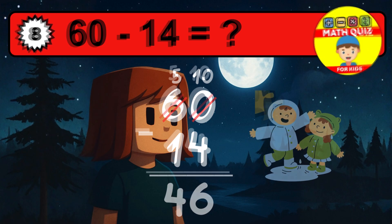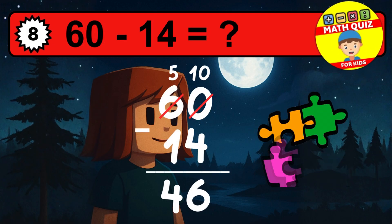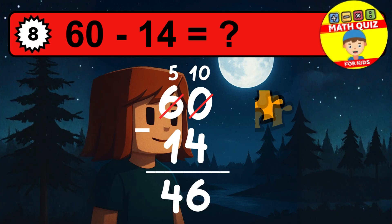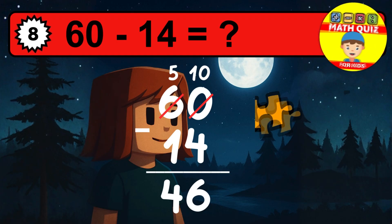Then we go to the tens. Five minus one is four. The final answer is forty-six.